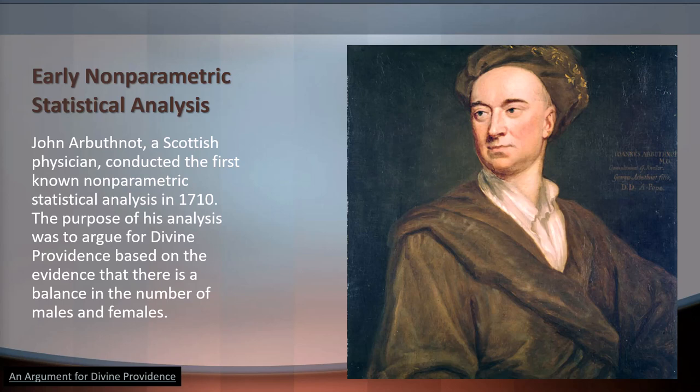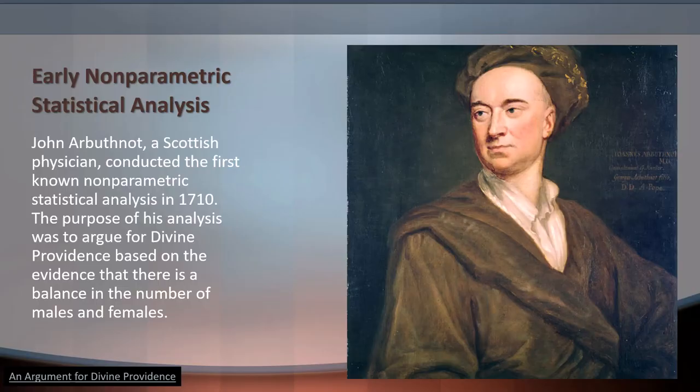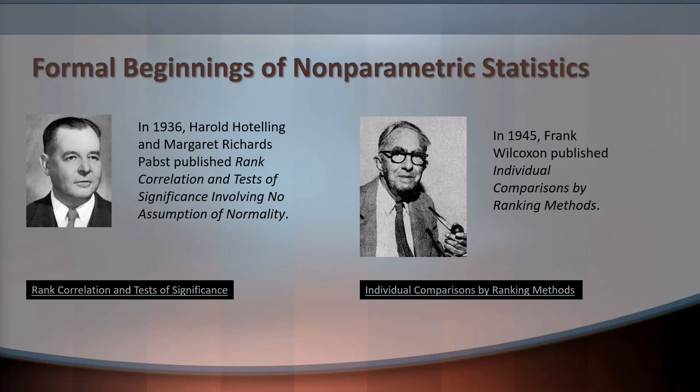The Scottish physician John Arbuthnot conducted the first known non-parametric statistical analysis, and the purpose of this analysis was to argue for divine providence based on the evidence that there is a balance in the number of males and females. I would invite you to take a look at this very interesting early study and use of inferential statistics as well as non-parametric statistics. But if you read nothing else, make sure you go down and read his conclusions in the last paragraph — quite interesting.